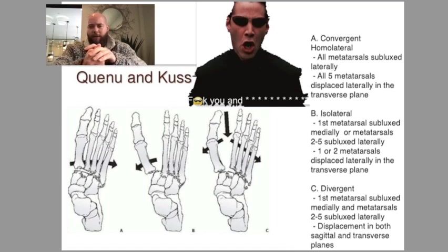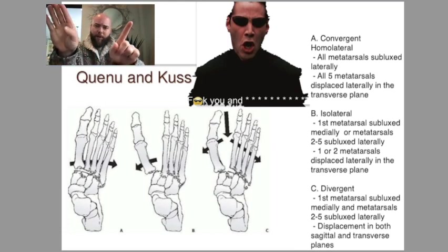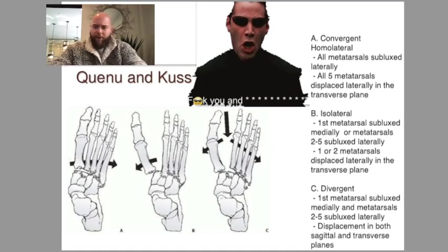And then C is the worst, it's divergent. And that's where the first metatarsal dislocates medially, and two through five go laterally. It's just as simple as that. If you can just memorize this image, that's pretty much it.